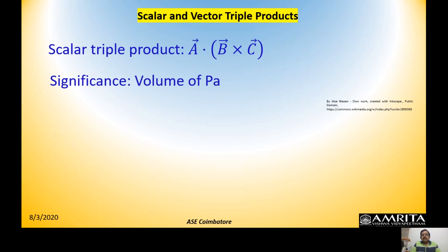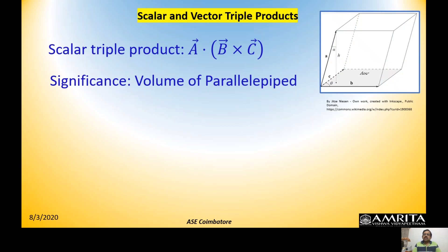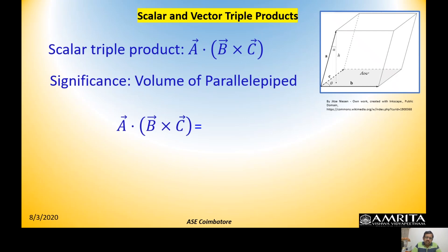The resultant of A · (B × C) is a scalar. The significance of this scalar triple product is that it represents the volume of a parallelepiped, as seen in the diagram. To calculate it, we use the determinant form: since we already know B × C in determinant/matrix form, A · (B × C) can be expressed as a 3×3 determinant.